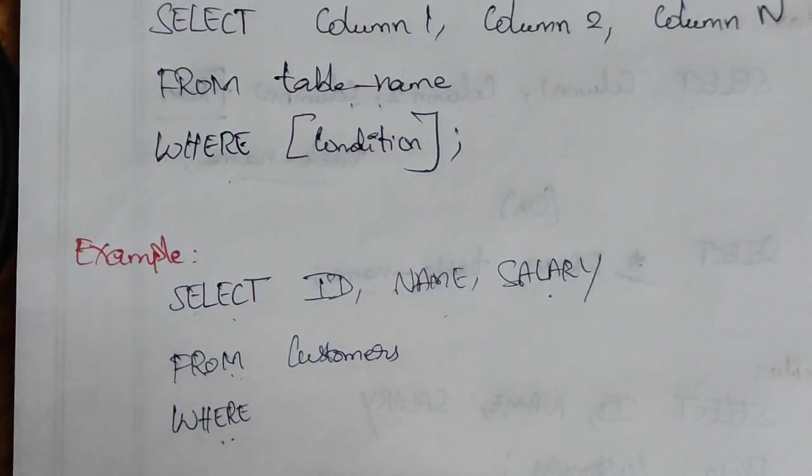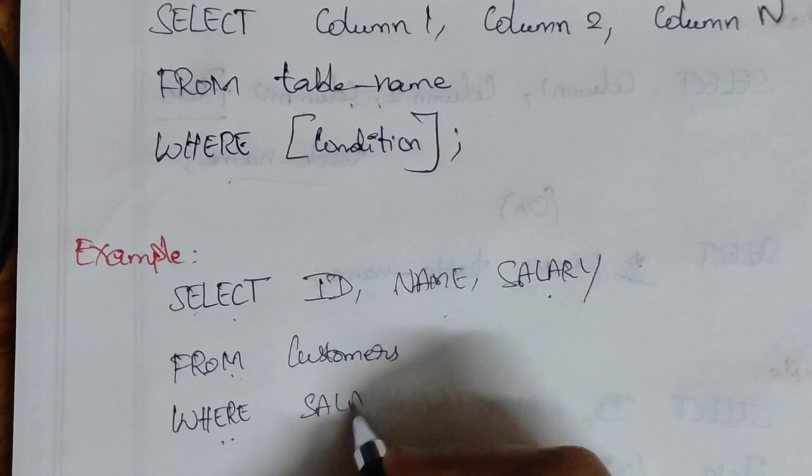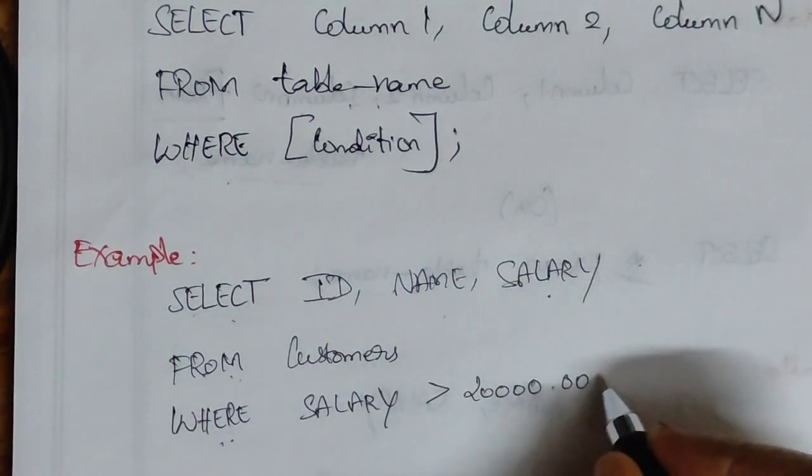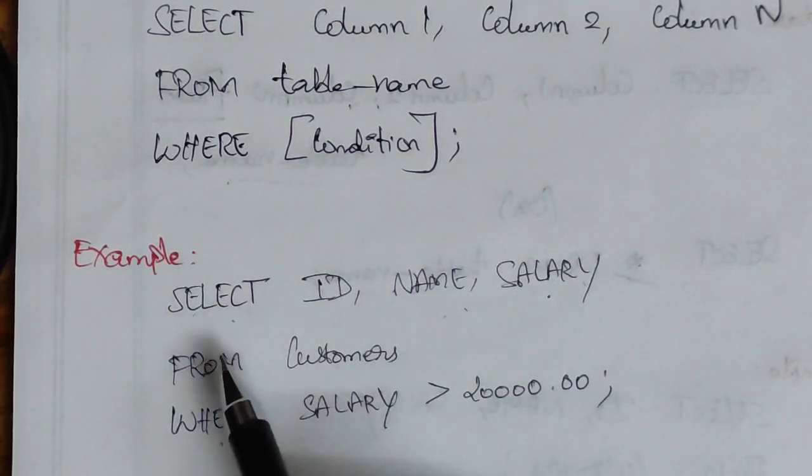Now we have the WHERE condition. The keyword is WHERE. You can use attribute names and table names in capital or small letters - SQL query is not case-sensitive for these. The condition is WHERE salary should be greater than 20,000. And semicolon. This is the query.